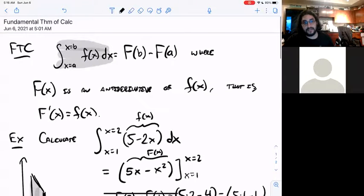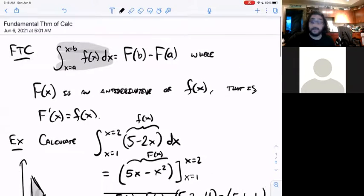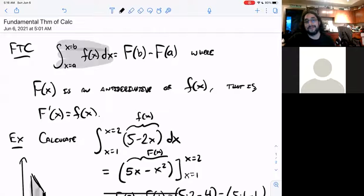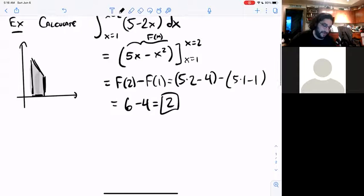Right? So there's an example of calculating an area under the curve using an antiderivative, using fundamental theorem of calculus, which says you don't need to do a Riemann sum if you can find an antiderivative. Super powerful, right? Notice how much easier that is than a Riemann sum.